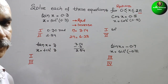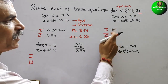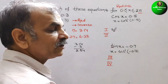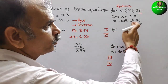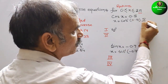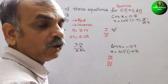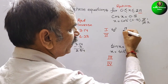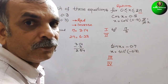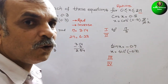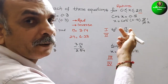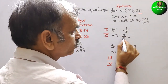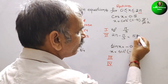For cos x = 0.5: we know cos(1/2) = 60°, which is π/3 radians (since 180/3 = 60°). That is the first quadrant value. For the fourth quadrant: 2π − π/3 = (6π − π)/3 = 5π/3.